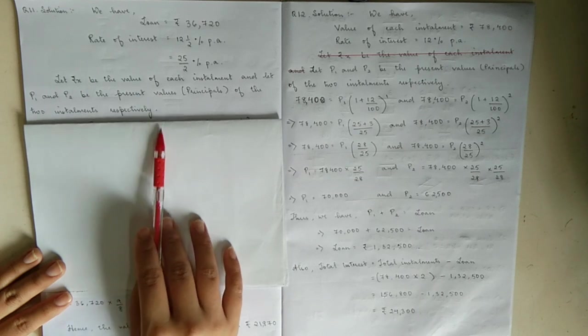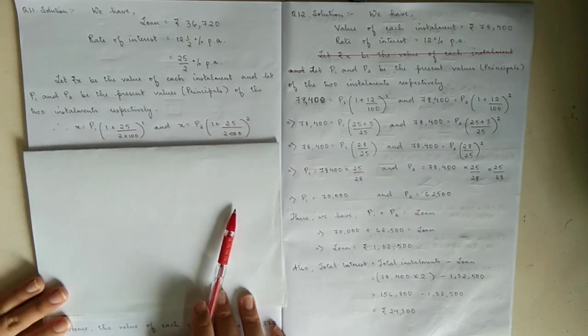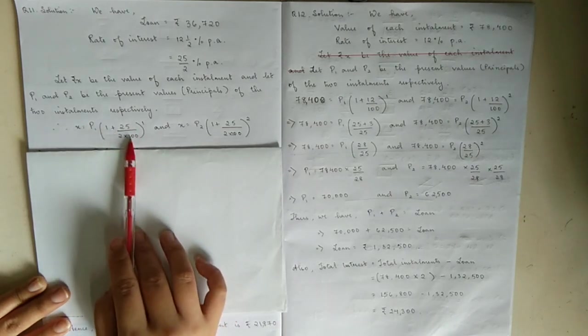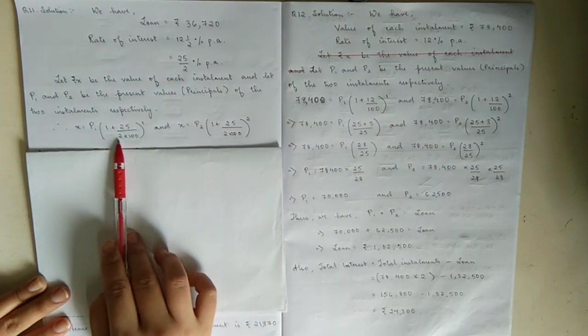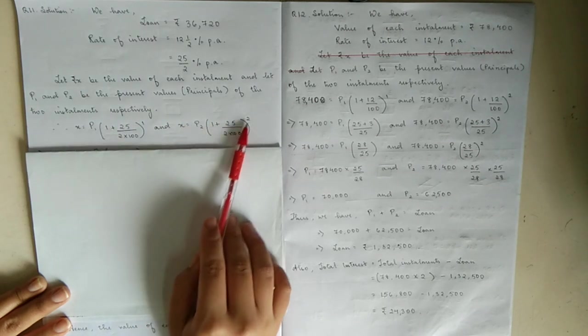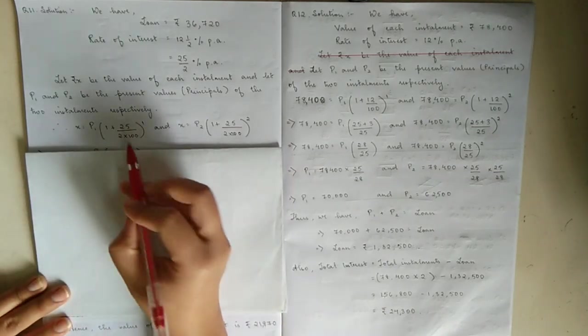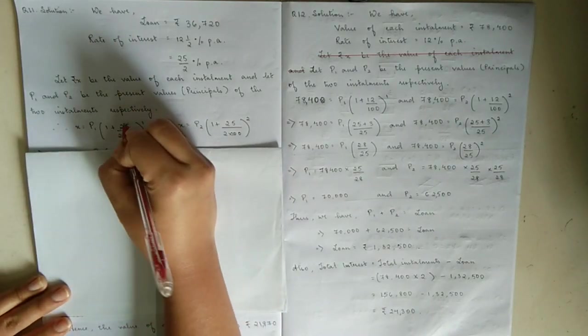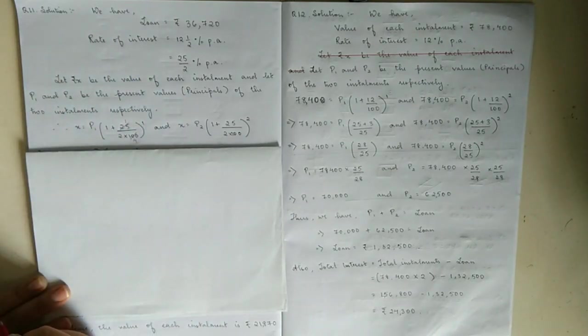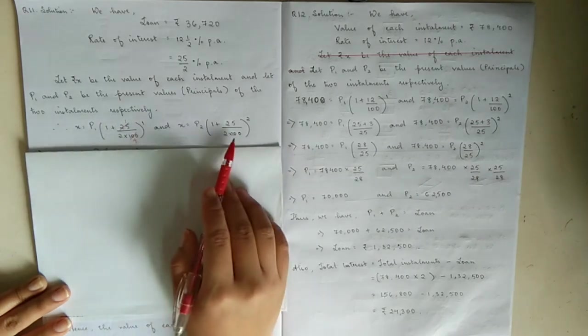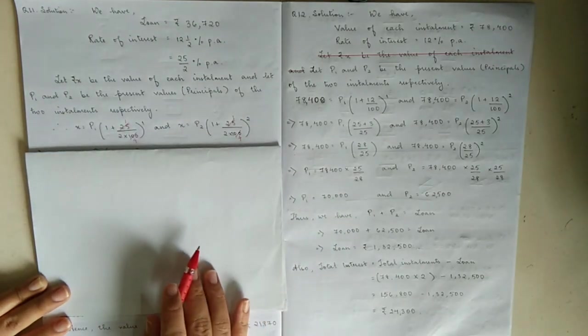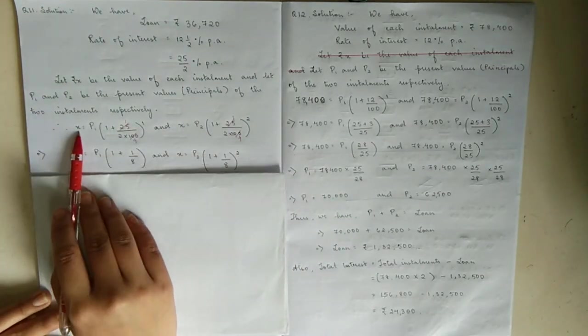You will use the same formula: x equals p times one plus r by 100 to the power n. We have 25 by 2 instead of r, so we put 2 in the denominator along with 100. So it's 25 by 2 into 100 for both p1 and p2, with powers 1 and 2 respectively. 25 and 100 cancel out - 25 goes into 100 four times, so you get 4 times 2 equals 8 in the denominator for both.